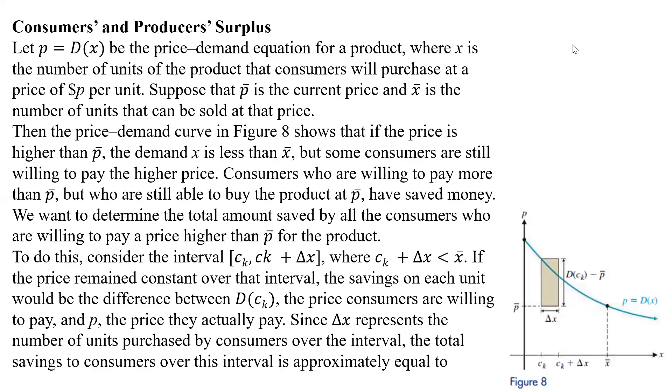Okay, so here we're going to look at consumers and producers' surplus. If we let P equal D of X be the price-demand equation for a product, where X is the number of units of the product that consumers will purchase at a price of P dollars per unit, suppose that P bar is the current price and X bar is the number of units that can be sold at that price.